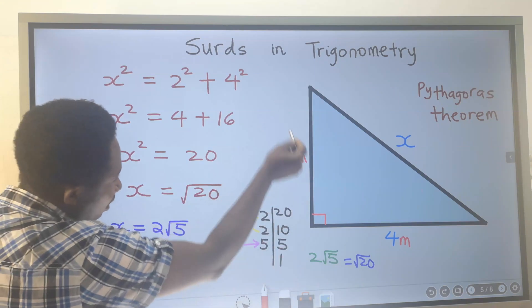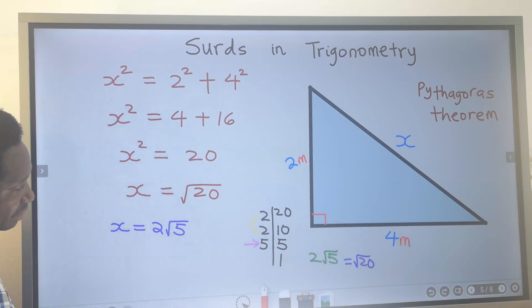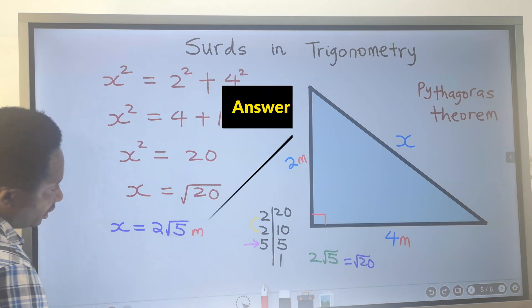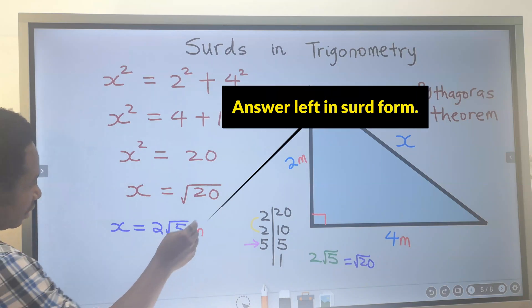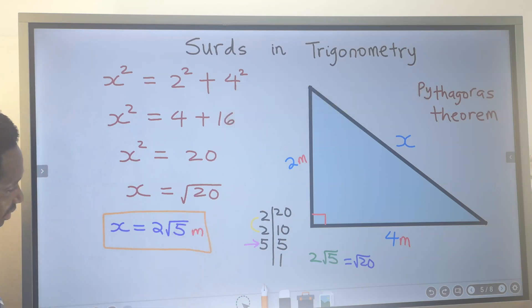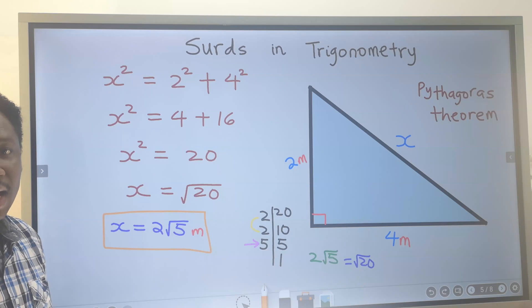This length is in meters. This length is in meters. And this length is in meters. This will be in meters. And we have found the value of our x in surd form. We applied Pythagoras theorem because the internal angles are not our concern.